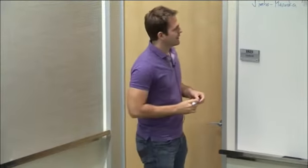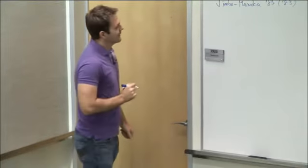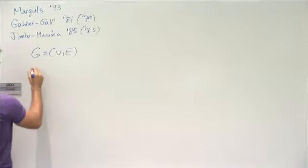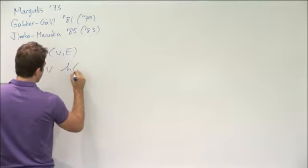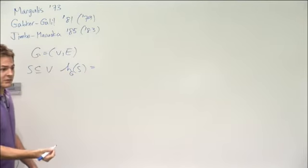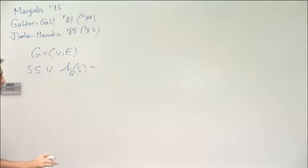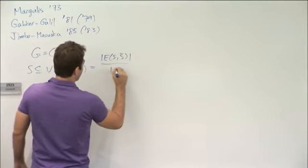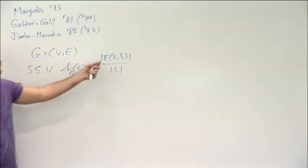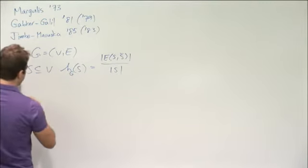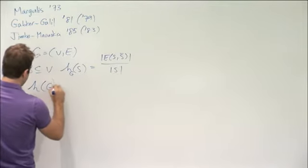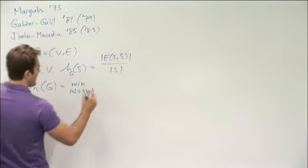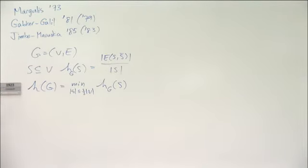Today I want to present a proof that has almost no ideas in it. We have a graph and a subset. Let's define the expansion constant of this subset with respect to the graph. The expansion constant of subset S is just the number of edges that cross from S to its complement, divided by the size of S. And H of G is the expansion constant of G: look over all subsets of size at most half, and take the minimum expansion of that subset.